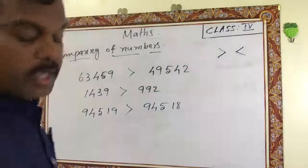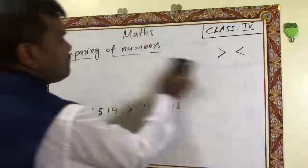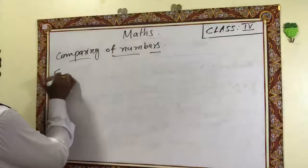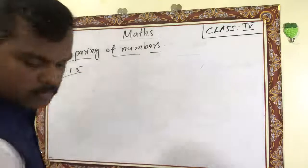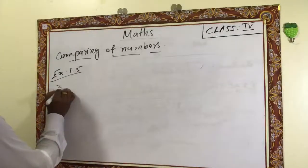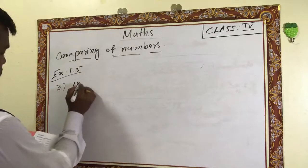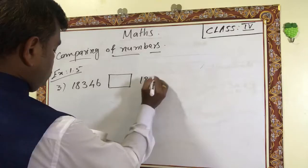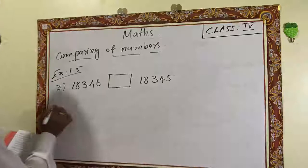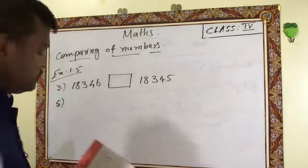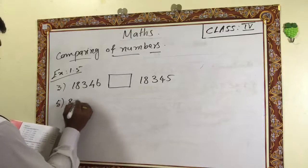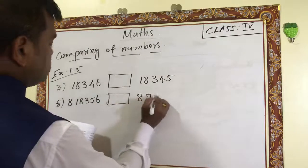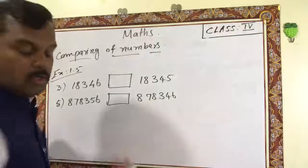From page 10, Exercise 1.5, I will explain question three and the fifth question. The numbers are: eighteen thousand, three hundred and forty-six; eighteen thousand, three hundred and forty-five; eight lakh seventy-eight thousand three hundred fifty-six; and eight lakh seventy-eight thousand three hundred forty-six.